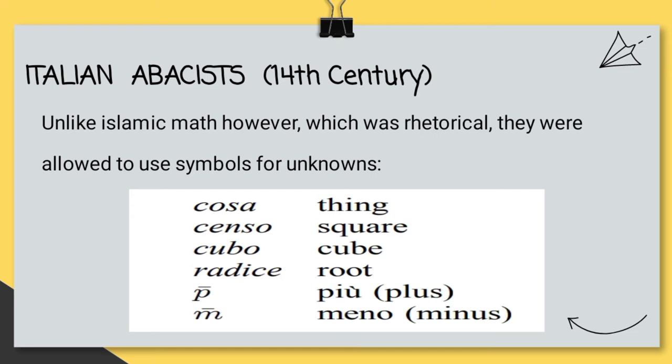Unlike Islamic math, which was rhetorical, they were allowed to use symbols for unknowns. We have these Italian words here, and they presented different things. They came up with some words to mean certain things like COSA means thing, SENSO means square, CUBU means cubed, RADIS means root, PIO means plus, and RENO means minus. These were used in the problems, and we'll see that here next in the example.